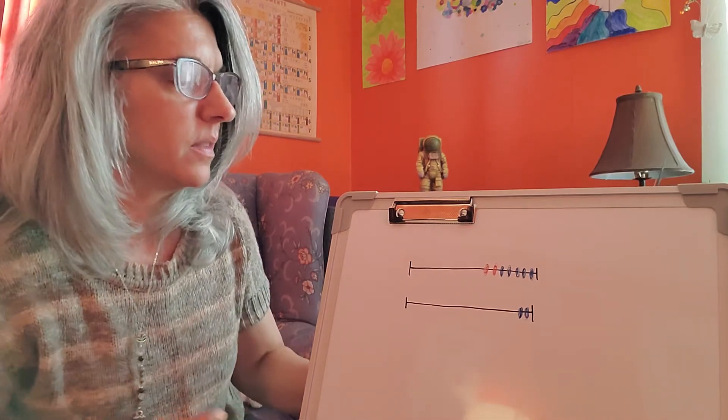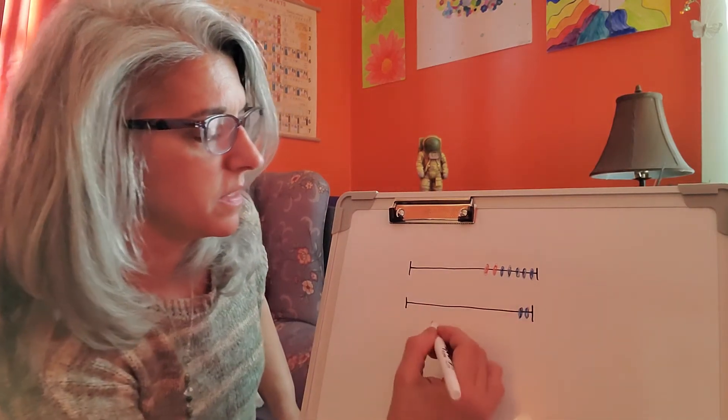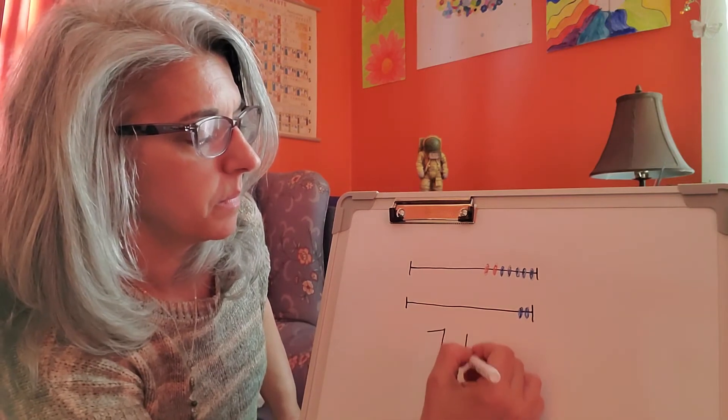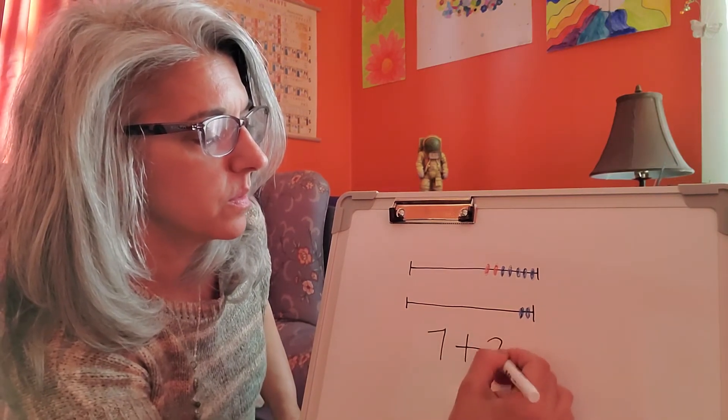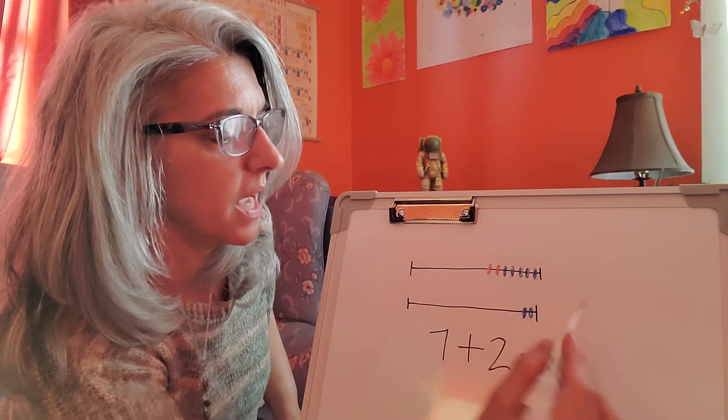So again, I have 1, 2, 3, 4, 5, 6, 7, plus 1, 2, equals 1, 2, 3, 4, 5, 6, 7, 8, 9.